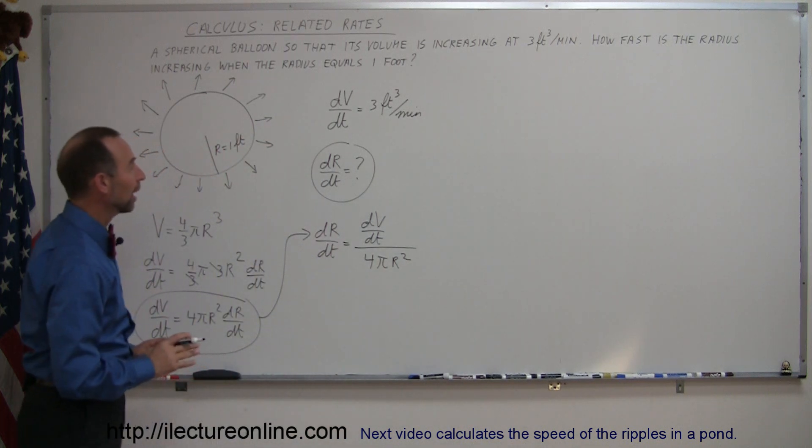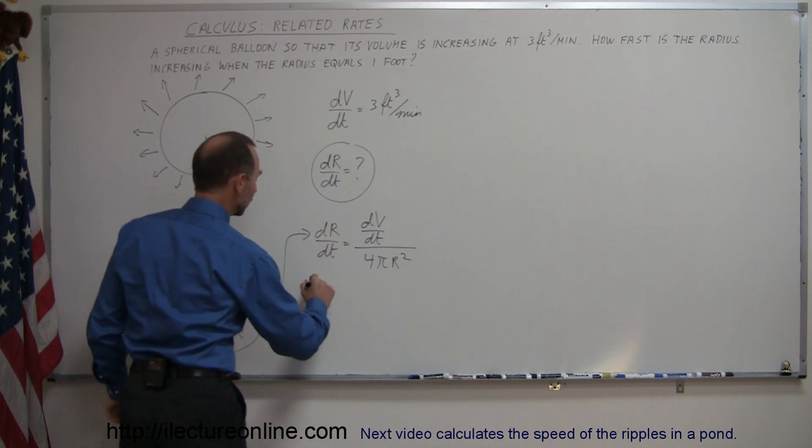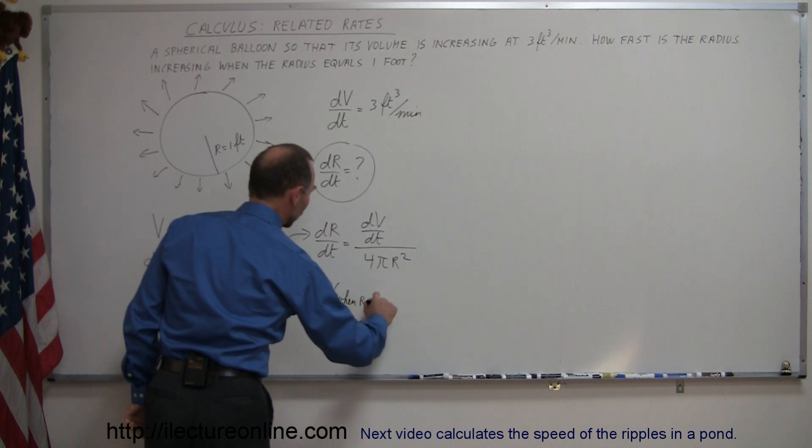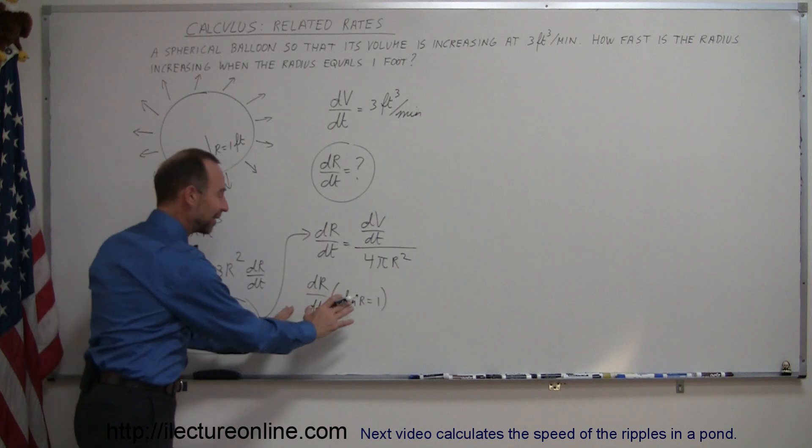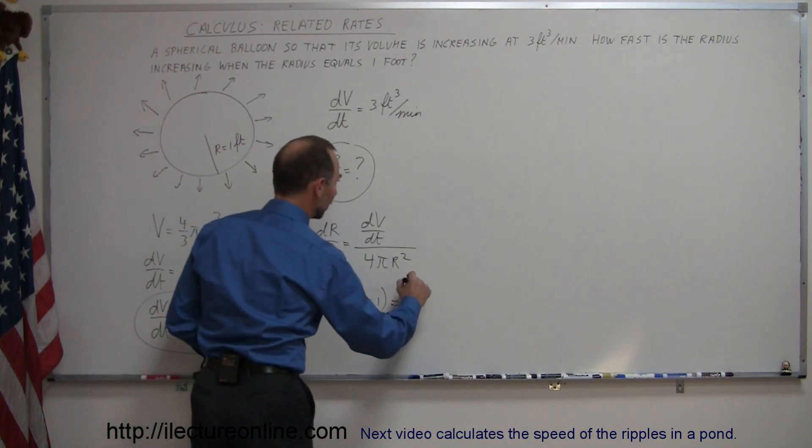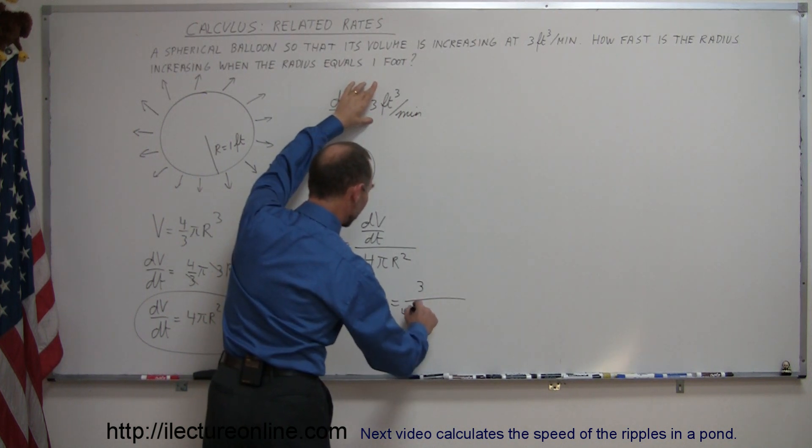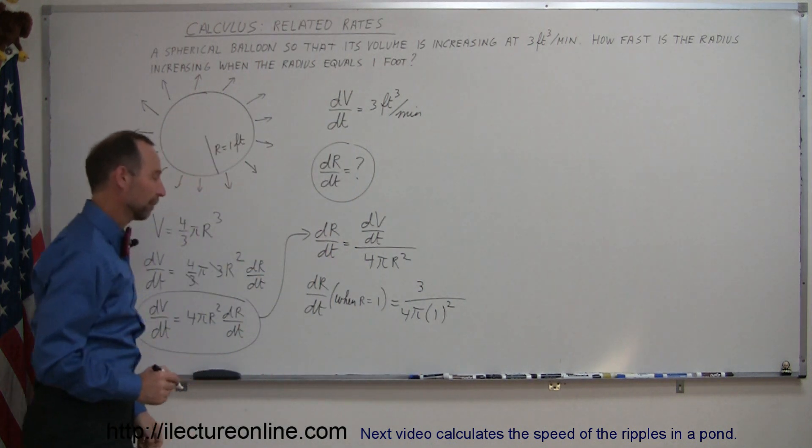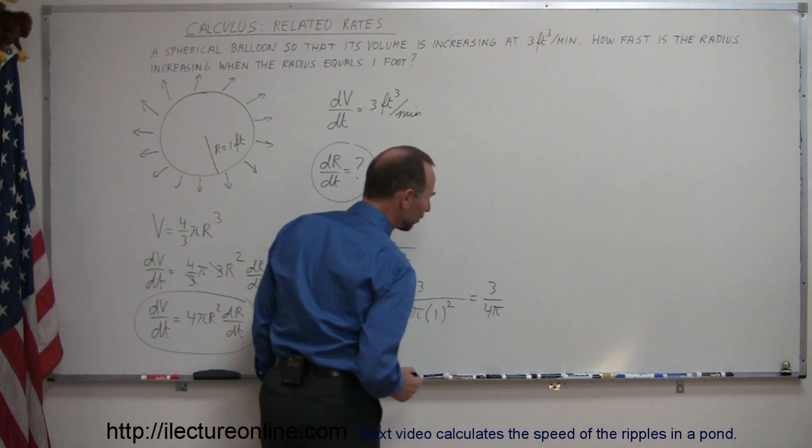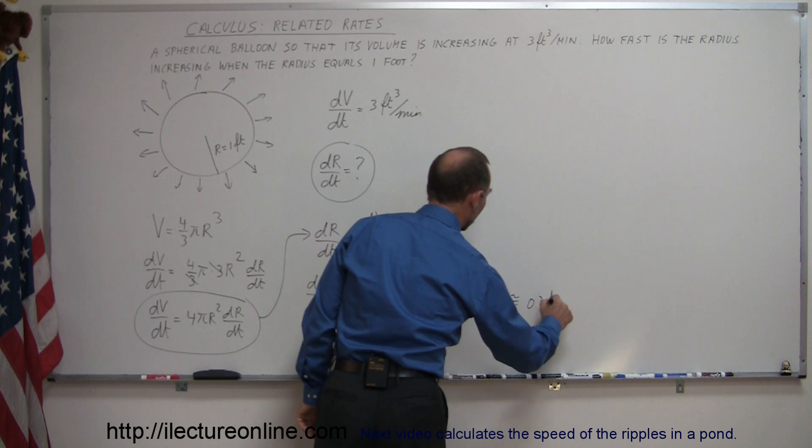And now all we have to do is find dr/dt when r is a very specific value, and right here, when the radius equals 1 foot. So what we have to do now is find the dr/dt when r equals 1, and I like to write that out like that so it makes a lot more sense. We're finding dr/dt at a specific time when r is exactly equal to 1, so this is equal to dV/dt, and dV/dt is equal to 3 feet per minute, divided by 4π times, and r in that case will be 1 foot. And then you can see that the dr/dt when r is equal to 1 is equal to 3 divided by 4π, and 4π is about 10, and so 3 divided by 10 would be about 0.3 foot per minute.